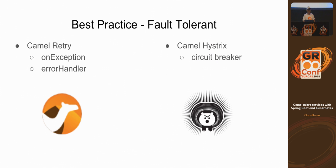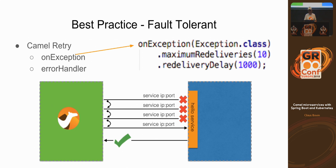A great practice around microservices and integration is fault tolerance — you need to build fault-tolerant services. Camel comes with two areas for that: client-side retries and circuit breakers. Here's an example of client-side retries: a hello service is called, the first three attempts fail, and then it succeeds on the fourth. You can tell Camel to retry up to 10 times on exception with a one-second delay.